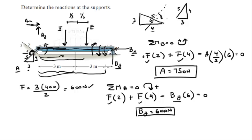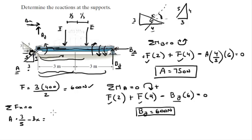Finding BX is straightforward using the sum of forces in X equals 0. The X component of A, given by A × (3/5), is going to the right. BX goes to the left, so: A × (3/5) − BX = 0. Substituting A = 750 N gives BX = 450 N.